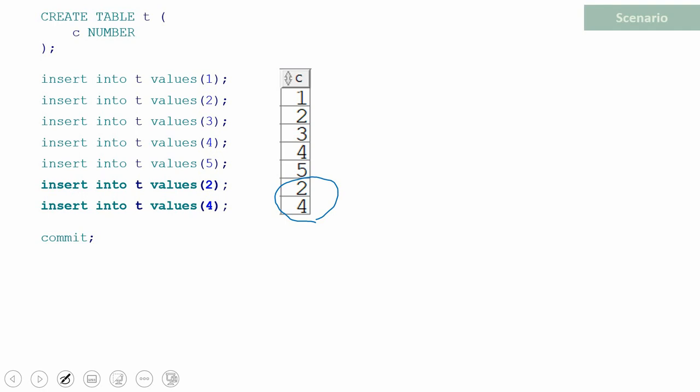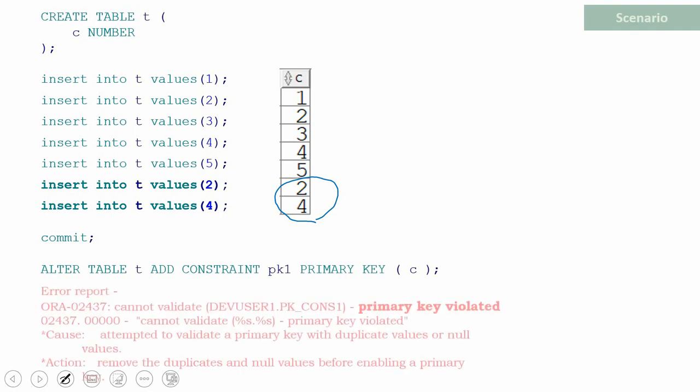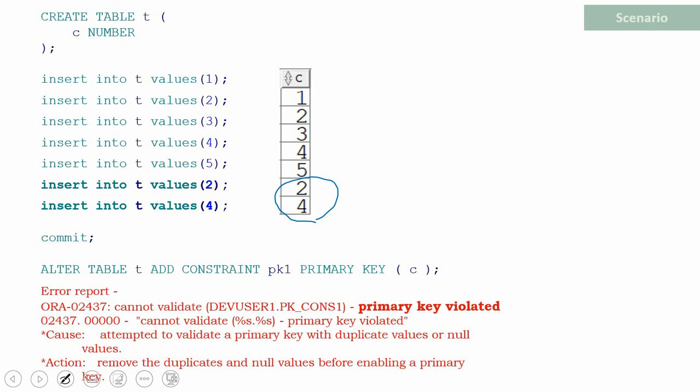At this point, I am trying to create a primary key constraint on this column by altering the table to add a primary key constraint. Obviously, the primary key constraint will fail with an error saying primary key violated because this table contains duplicate values. So now what we are going to learn is how to capture the rows that were the reason for these errors.